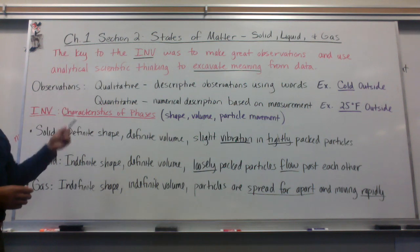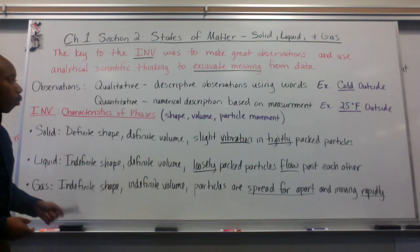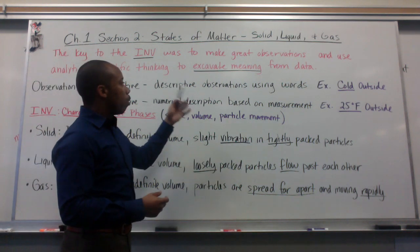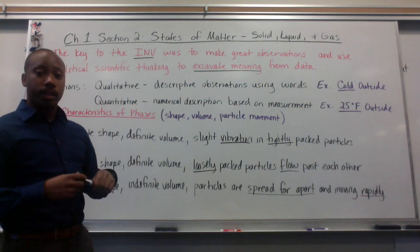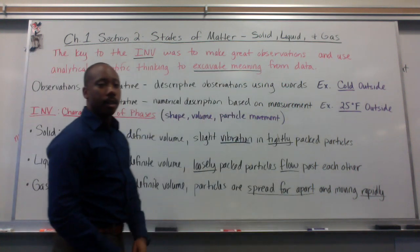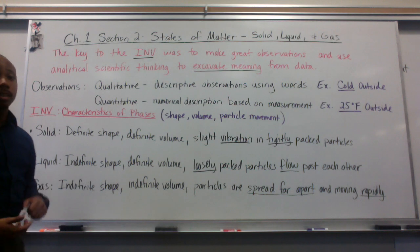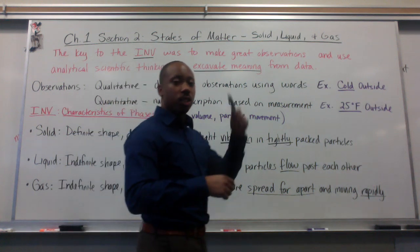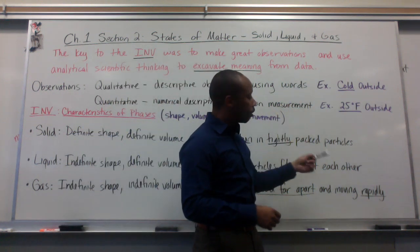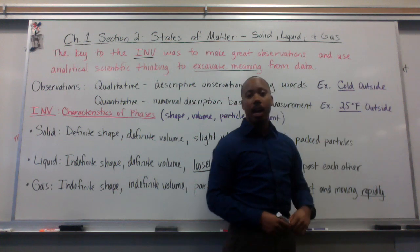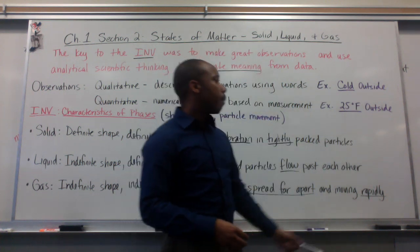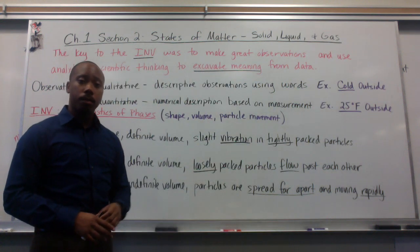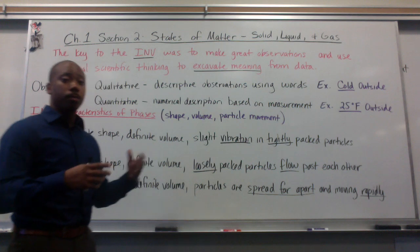When we talk about observations, there are two types. One type is called qualitative — a qualitative observation is a descriptive observation using words. For example, saying it's cold outside. Another type is a quantitative observation, which is a numerical description based on measurement. Instead of saying it's cold, quantitative is saying it's 25 degrees Fahrenheit outside. It still means the same thing, but you're putting a number to it rather than a general descriptive statement. Both are valid forms of observation.